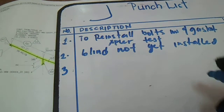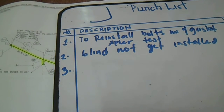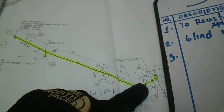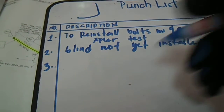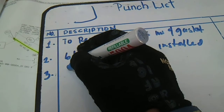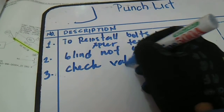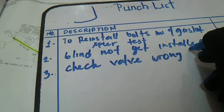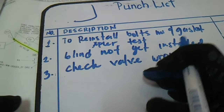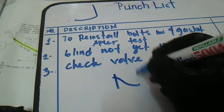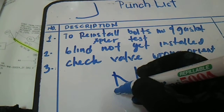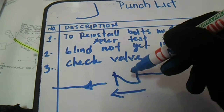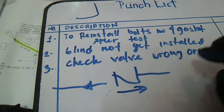Number three: you have a comment to check valve wrong orientation. This means the check valve flow direction — the flow is like this on the line — but they installed it in the wrong direction, so this is not good.